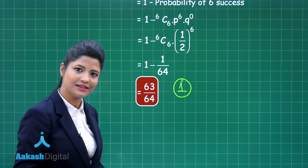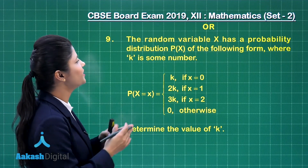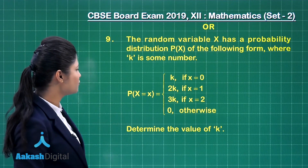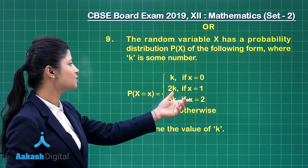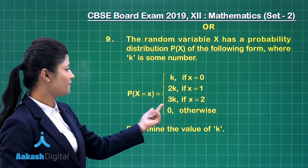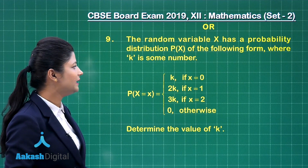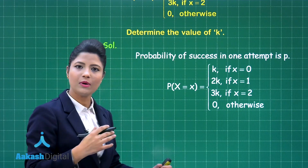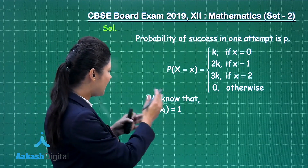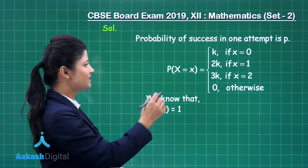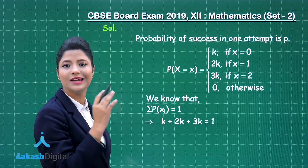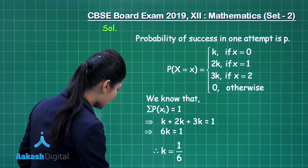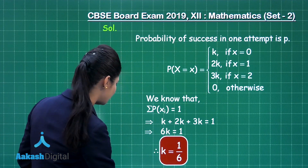Let's discuss the second choice in question 9. The random variable x has the probability distribution: P(x=0) = k, P(x=1) = 2k, P(x=2) = 3k, otherwise 0. We need to determine the value of k. Since the sum of all probabilities in a probability distribution equals 1, we have σP(xi) = 1, so k + 2k + 3k + 0 = 1, giving 6k = 1, therefore k = 1/6.